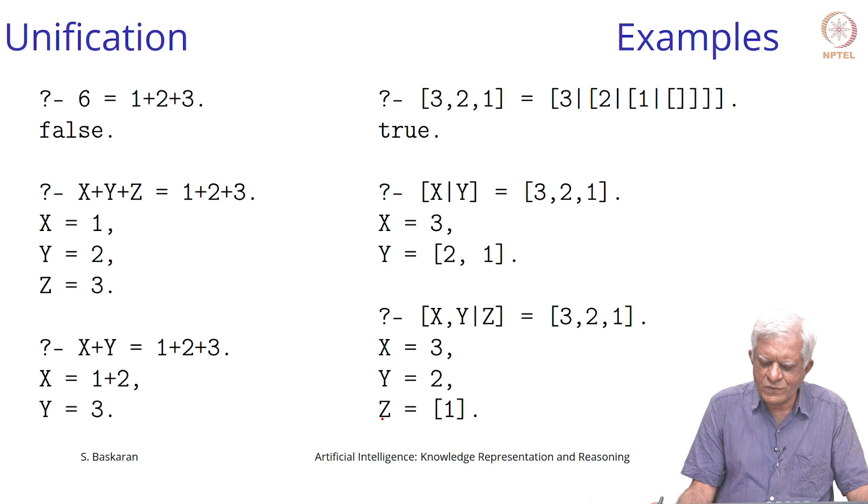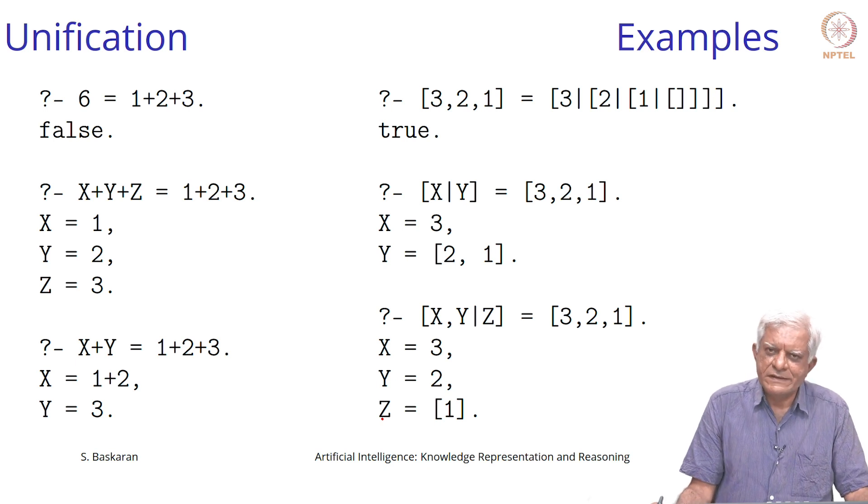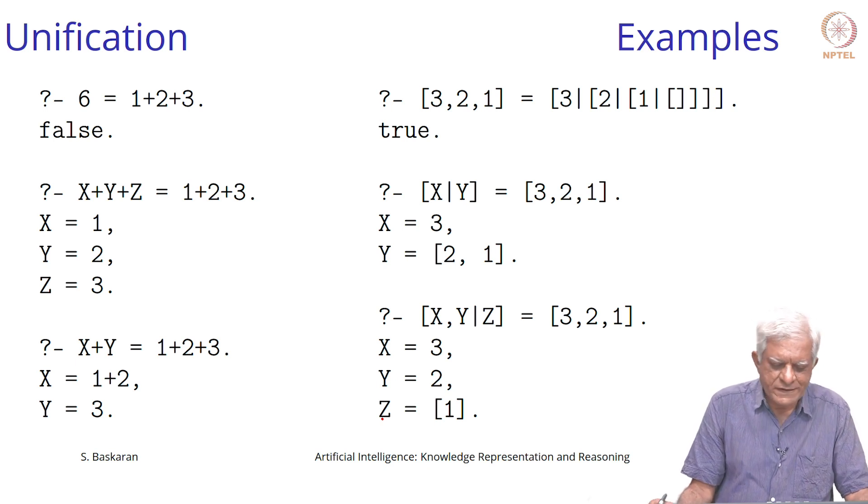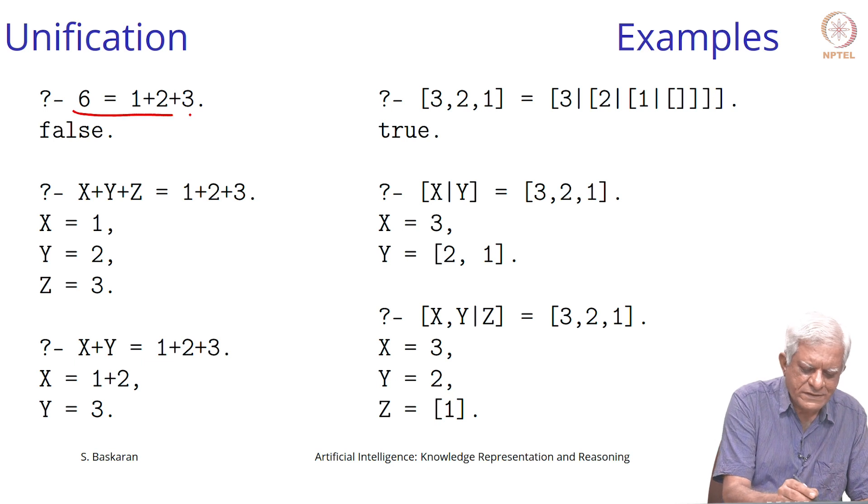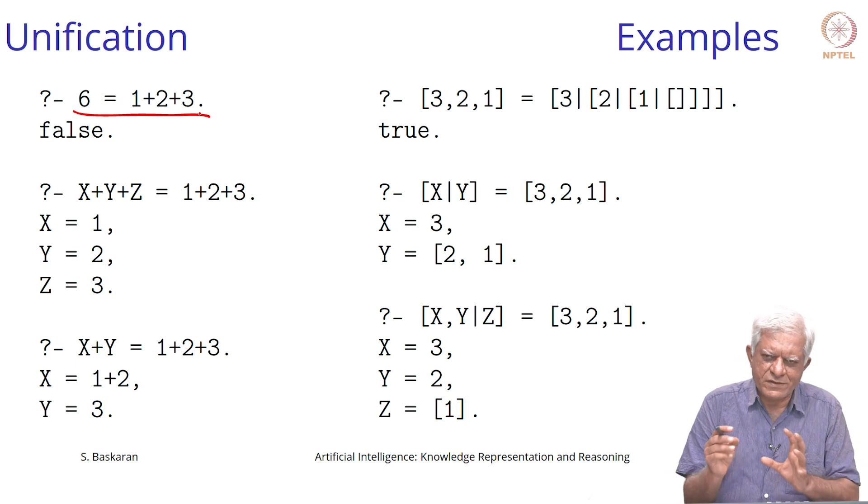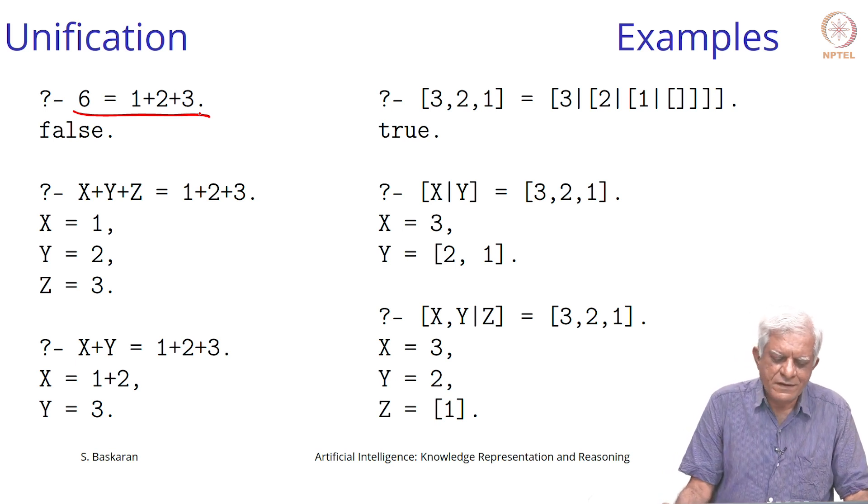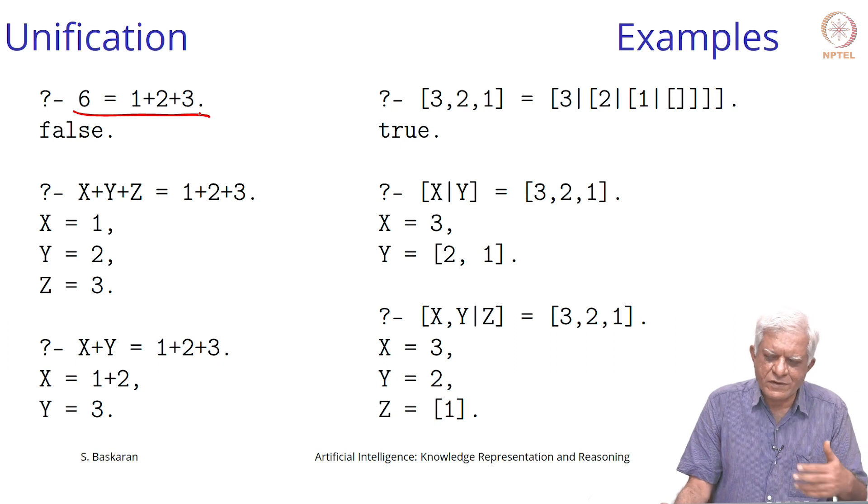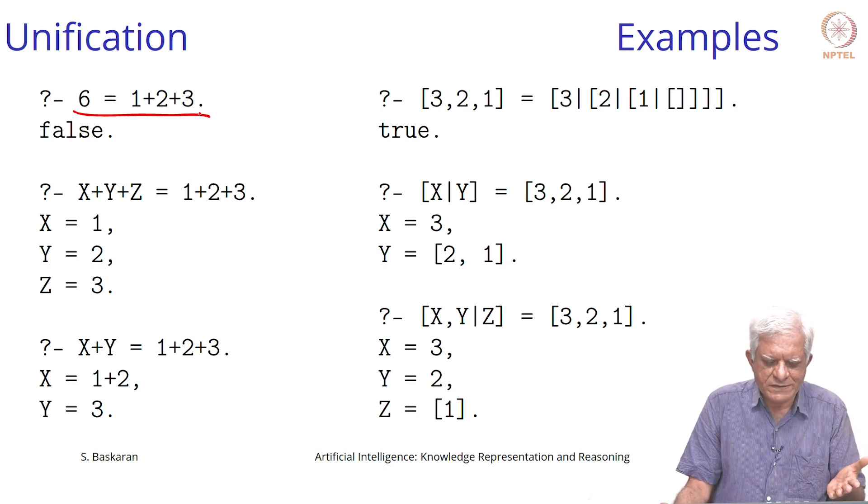We said that if two terms can be unified, then Prolog will say yes. If you ask is 6 equal to 1 plus 2 plus 3, it will say no, because it cannot find any way of making them the same. There are no variables in that and we have not evaluated the term 1 plus 2 plus 3.